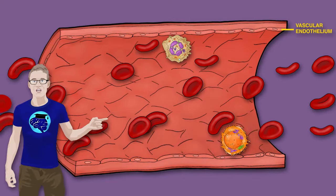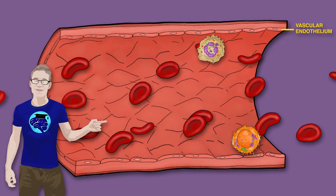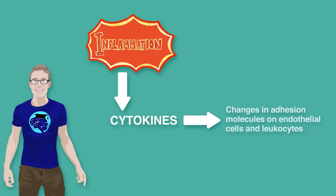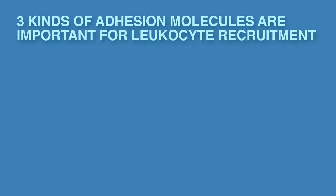Leukocytes need to actually stick to the blood vessel walls. During inflammation, cytokines cause changes in the adhesion molecules on the endothelial cells, as well as the adhesion molecules expressed by leukocytes. Three kinds of adhesion molecules are important for leukocyte recruitment.